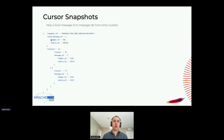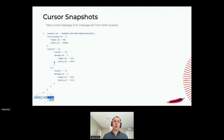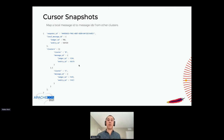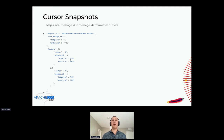The snapshot for cluster A contains a local message ID — say ledger ID 192, entry 1-2-3 — correlated to different message IDs in the other clusters. In cluster B, that might be ledger 1234, entry 4-5-6. In cluster C, a completely different message ID. This mapping means: if I have consumed everything up to this message ID in cluster A, I can advance my cursors in the other clusters to those positions, because consuming everything in cluster A up to that point guarantees you've consumed everything in cluster B up to its corresponding position.